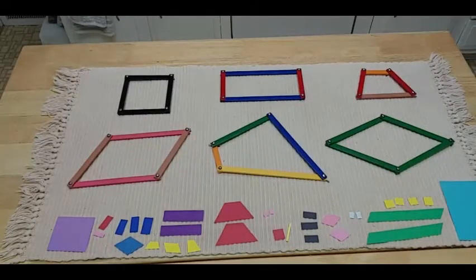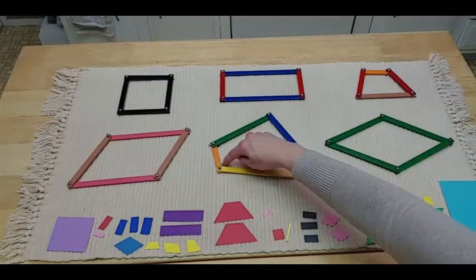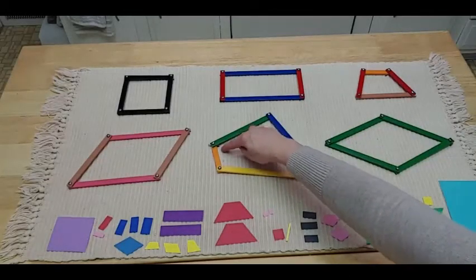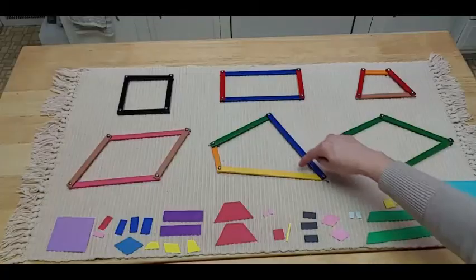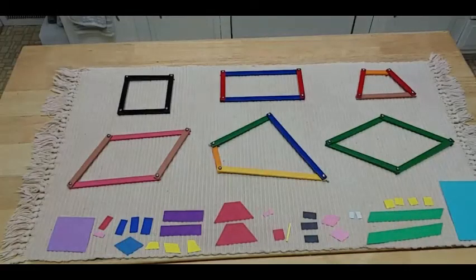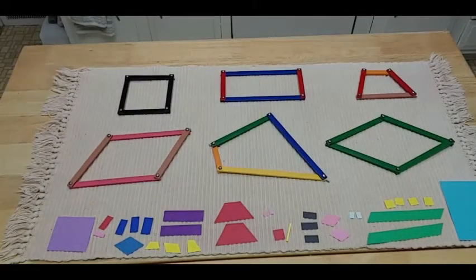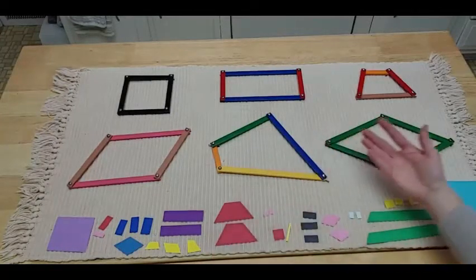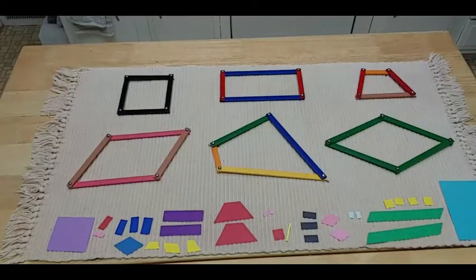Now remember, angles are where two sides come together to form this space right here. One, two, three, four. That's what's so special about quadrilaterals. Quad means four, so everything has four sides and four angles.